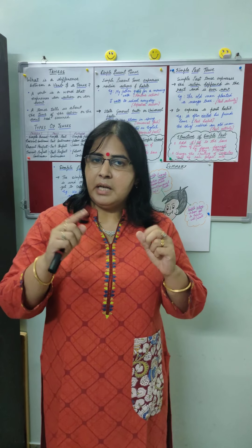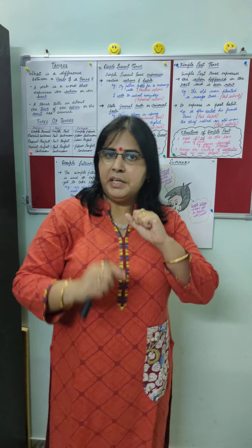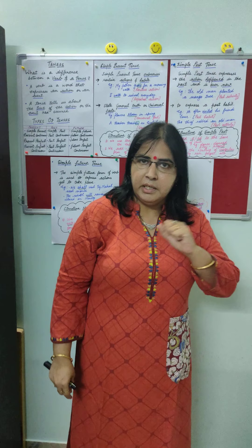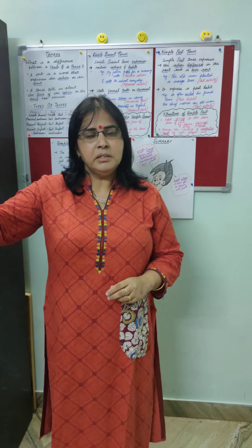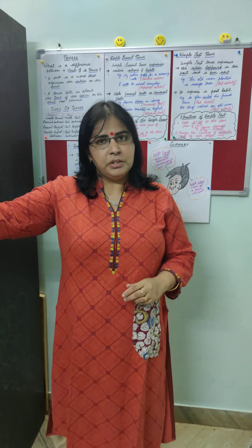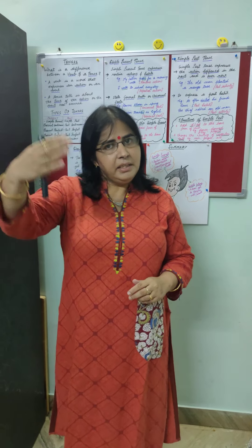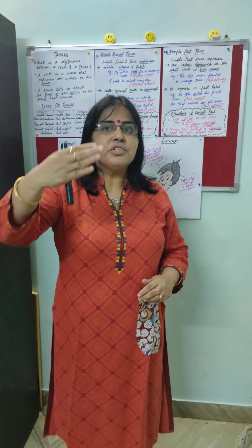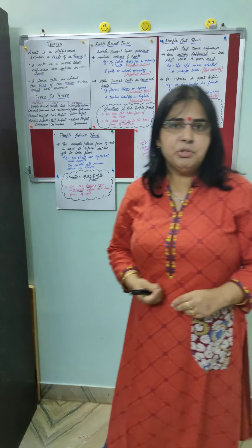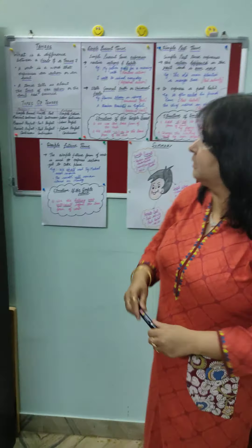Now children, the types of tenses. There are mainly three kinds of tenses — you can say there are three friends: present, past, and future. And these three friends have four children each. So let's see the different types of tenses.